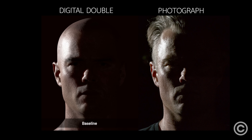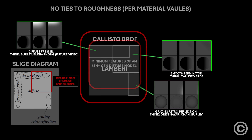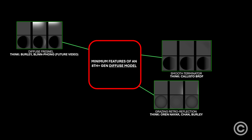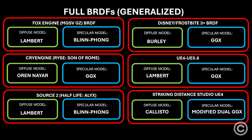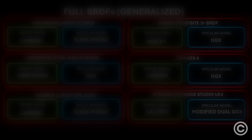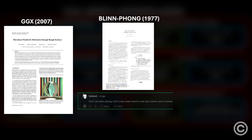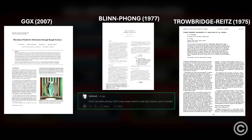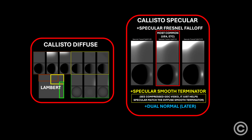These are the aspects a diffuse model needs to express in 2025. The full Callisto BRDF also adds controls to Unreal's specular model GGX, which is also used in the full Disney BRDF. The 2007 GGX model is actually an accidental reinvention of the Trowbridge-Reitz model from 1975, so it makes sense it would need a modern update. The Callisto BRDF provides a specular smooth terminator and a specular Fresnel falloff.